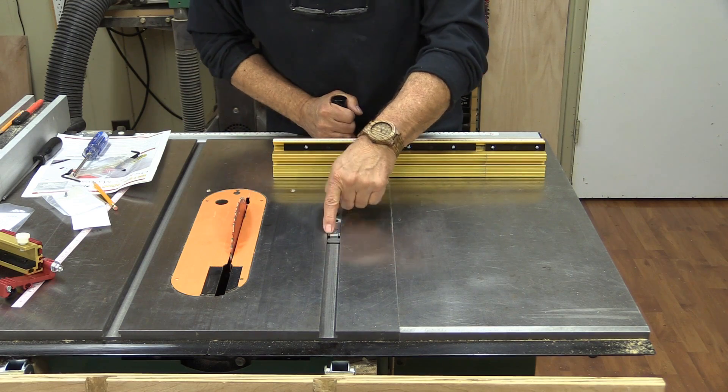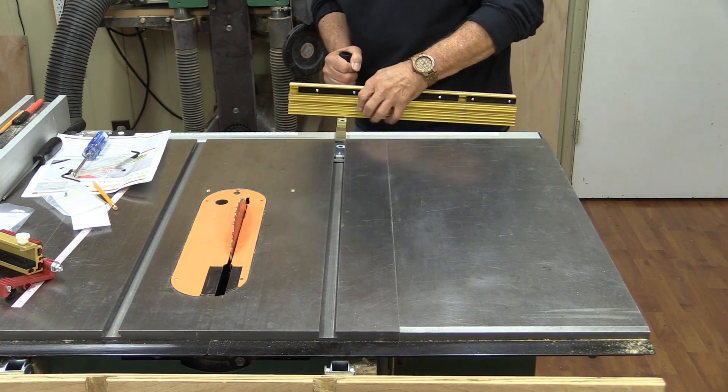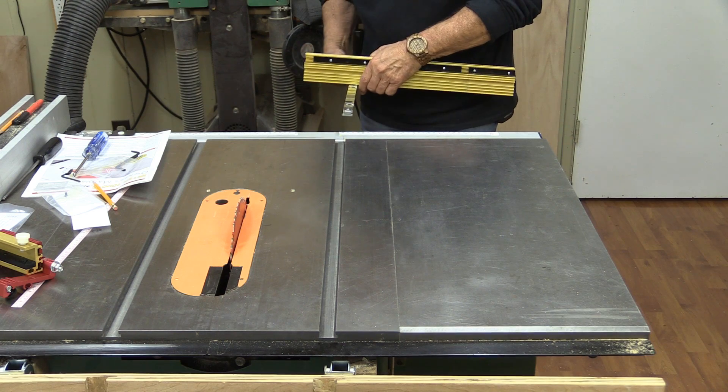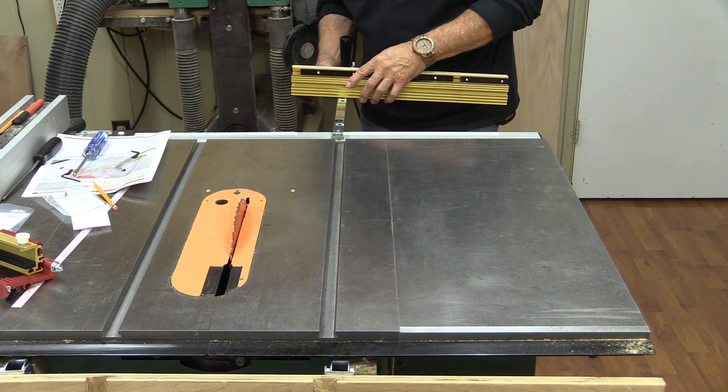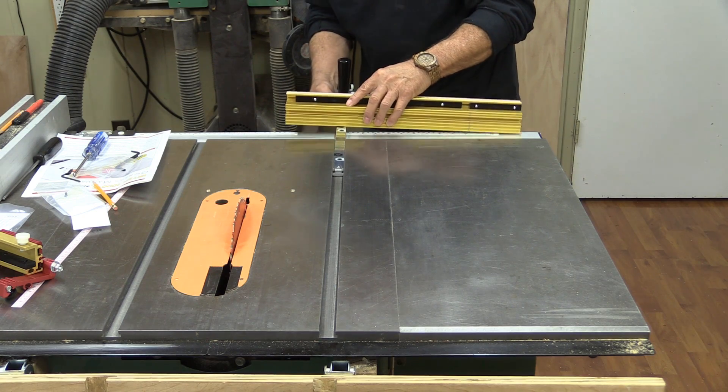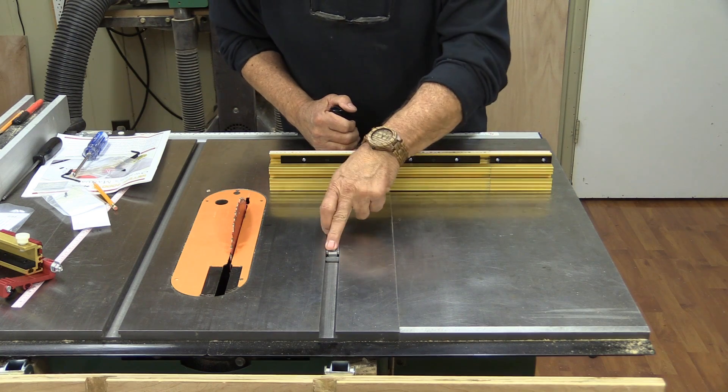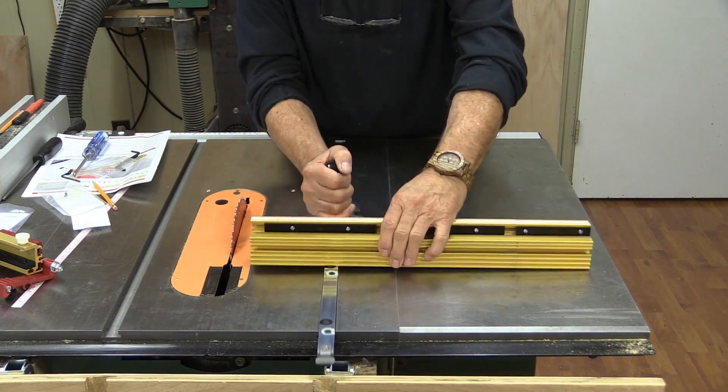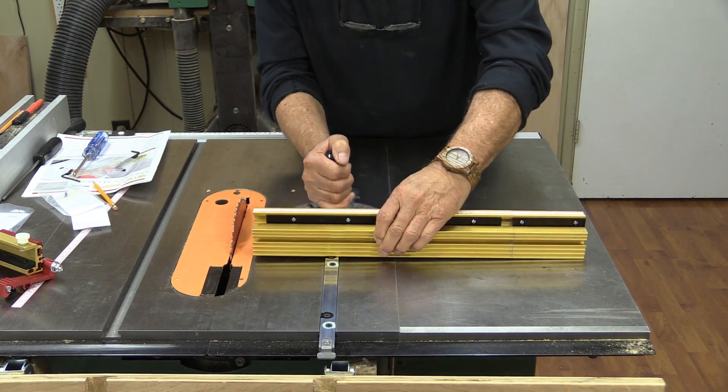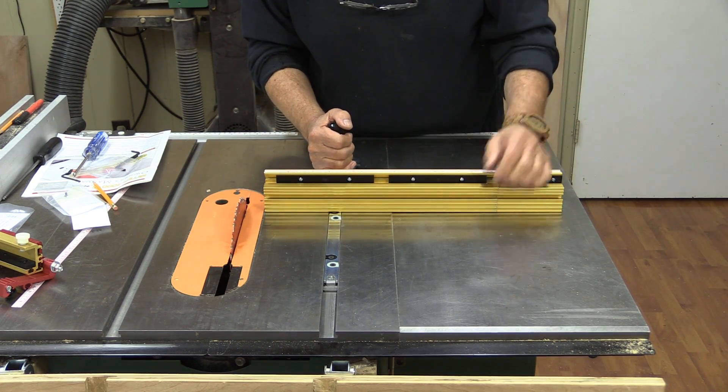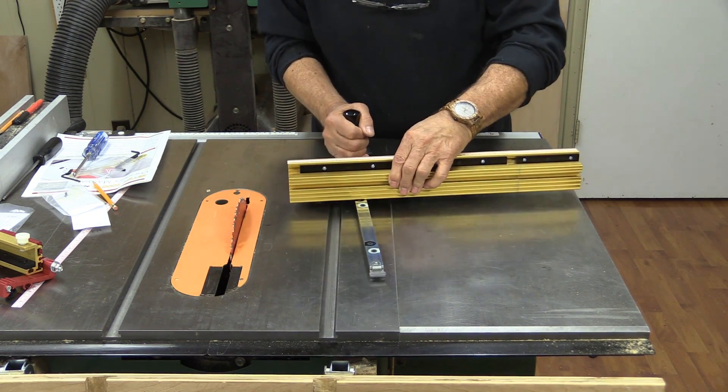Now these little T-slot adapters frustrate a lot of people because they're difficult to put in. You have to line them up with the slot and push it in. But here's the simple easy way: you don't start here and push them in, you go to the end of your slot, drop it down, and it just slips right in there. No frustration.